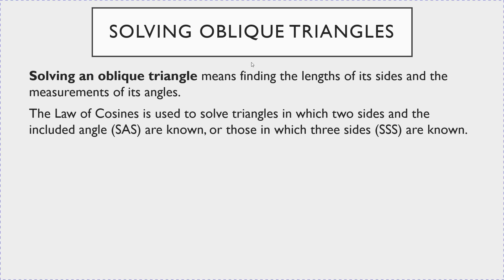Solving an oblique triangle means finding the lengths of its sides and the measurements of its angles. The law of cosines is used to solve triangles in which two sides and the included angle are known — that is, the side-angle-side case — as well as those in which all three sides are known: side-side-side.